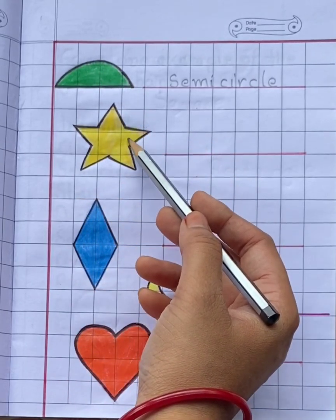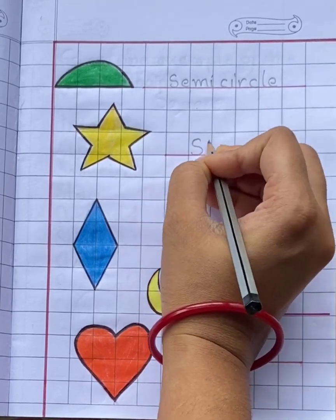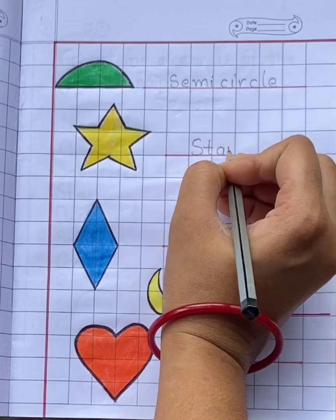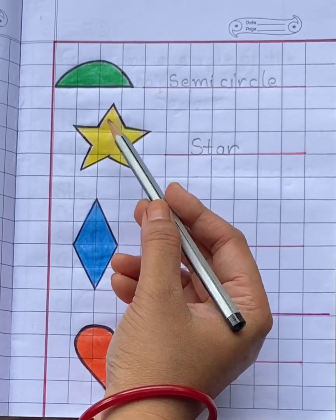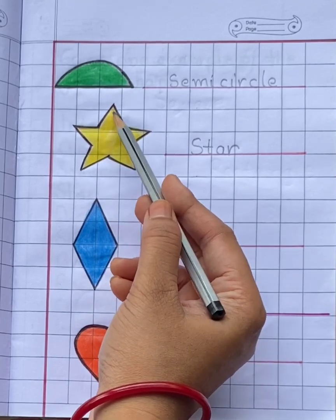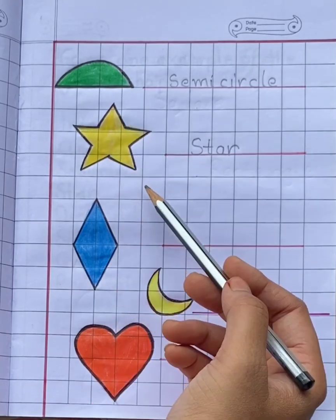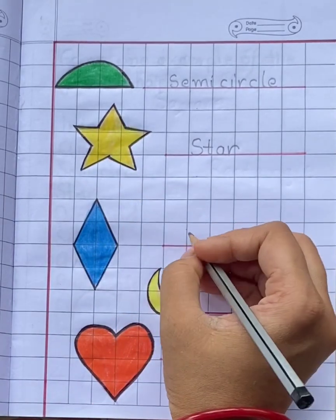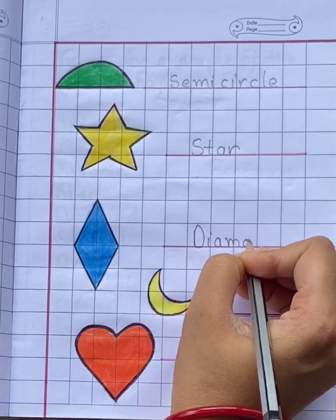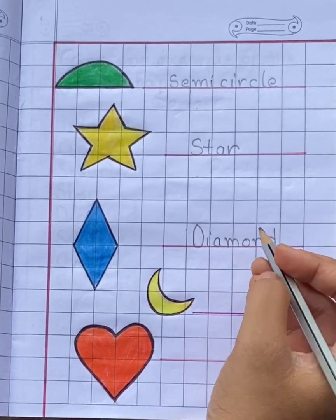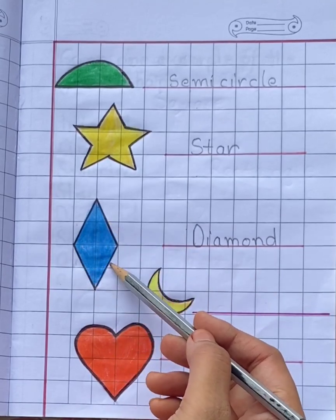Star. This is a star. S-T-A-R. A star is a shape with five points. How many points, children? Five points. This is a diamond. D-I-A-M-O-N-D. A diamond has four sides.